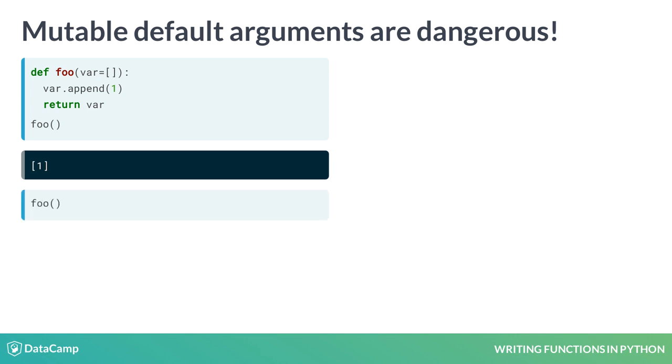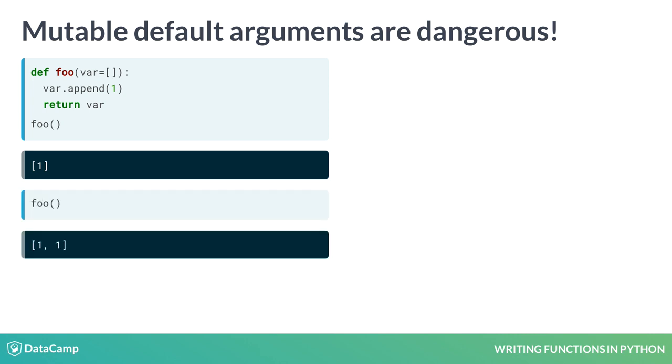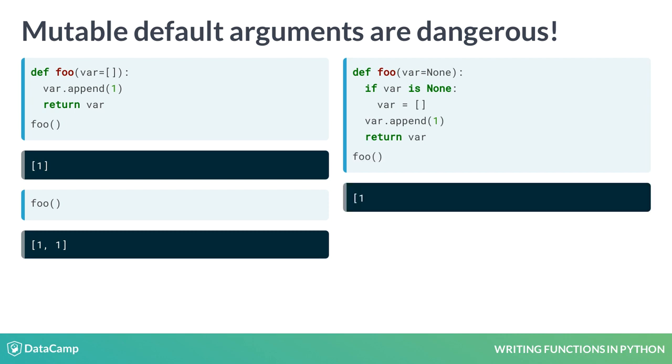But when we call foo again, the default value has already been modified. If you really want a mutable variable as a default value, consider defaulting to none and setting the argument in the function.